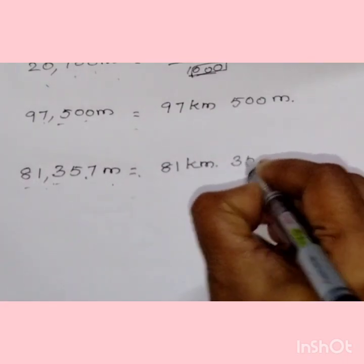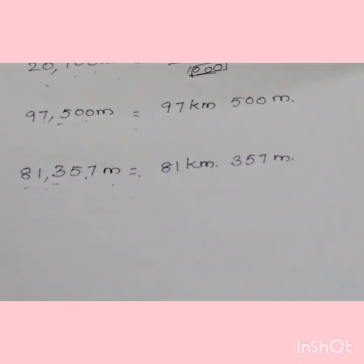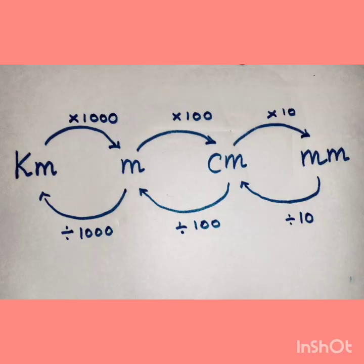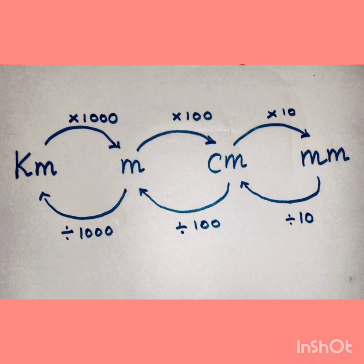Just remember this when doing conversion questions. Kilometer, meter, centimeter, millimeter. To convert kilometer to meter, multiply by 1000. Meter to centimeter, multiply by 100. Centimeter to millimeter, multiply by 10. When converting from smaller unit to bigger unit, divide: millimeter to centimeter divide by 10, centimeter to meter divide by 100, and meter to kilometer divide by 1000.